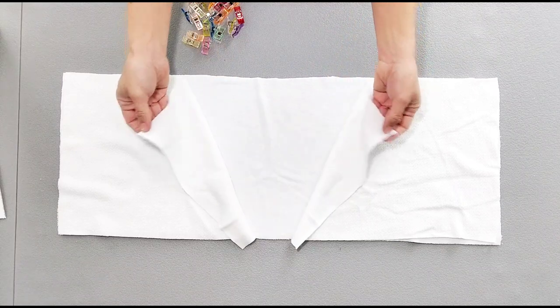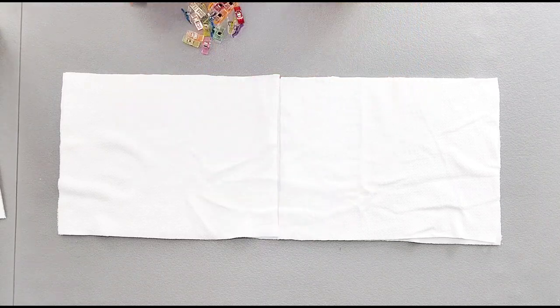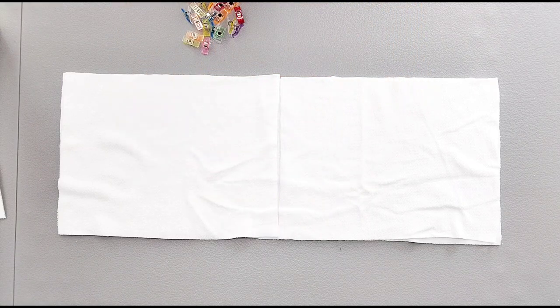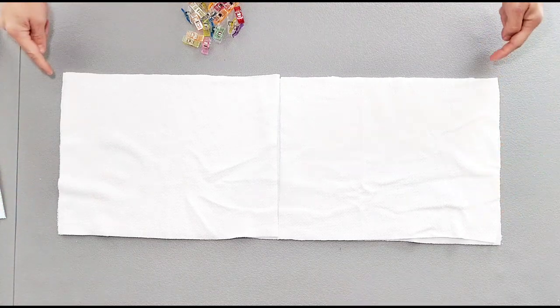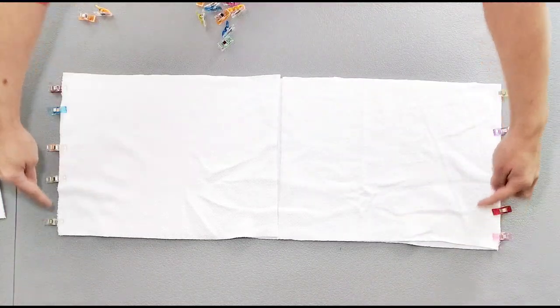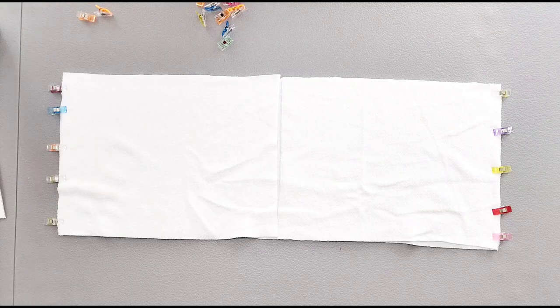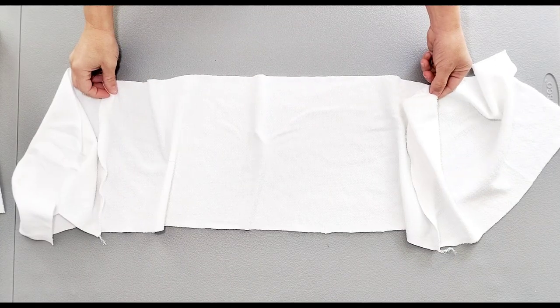Now place your front skirt pieces on top of your back skirt piece right sides together and pin the short edges. Sew or serge the short edges. Front and back skirt pieces are attached. I'm going to hem the bottom.